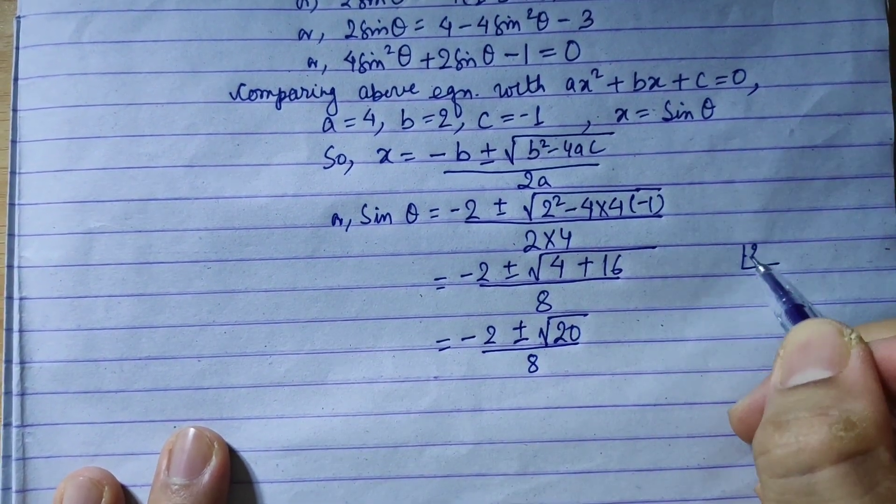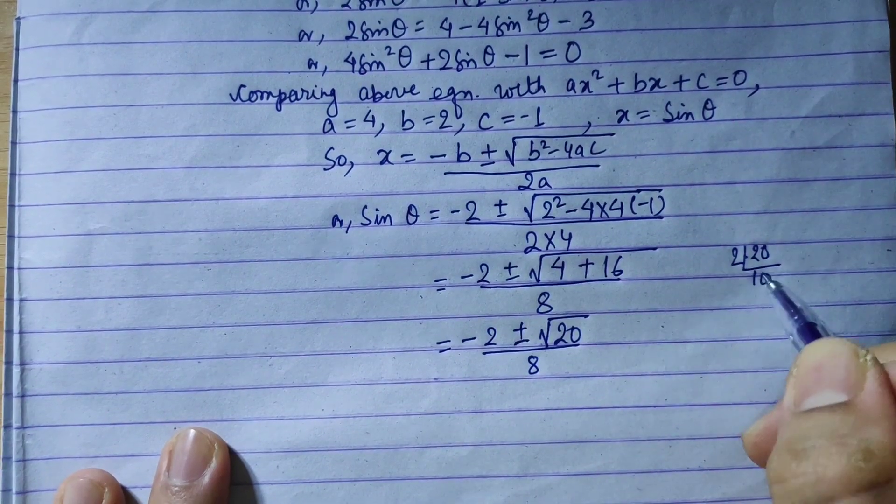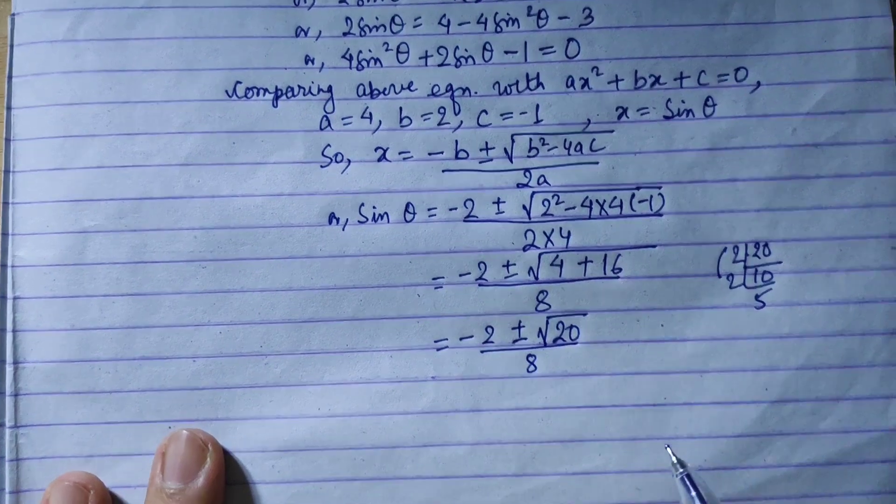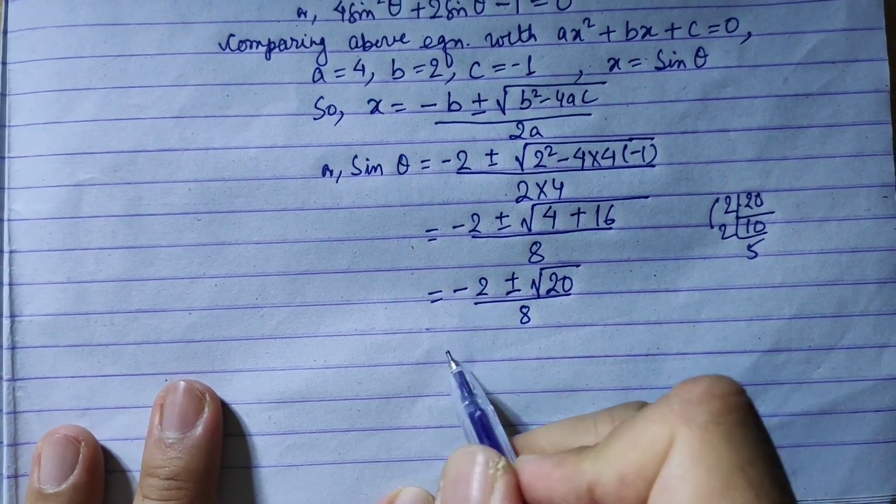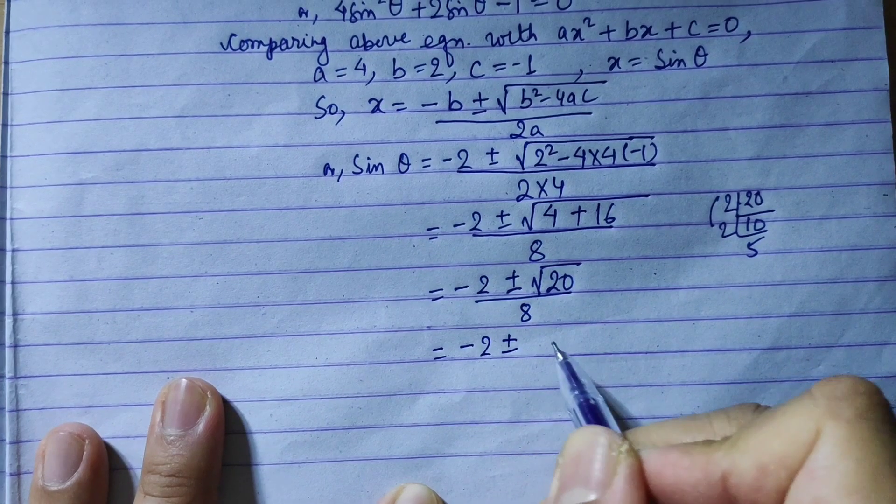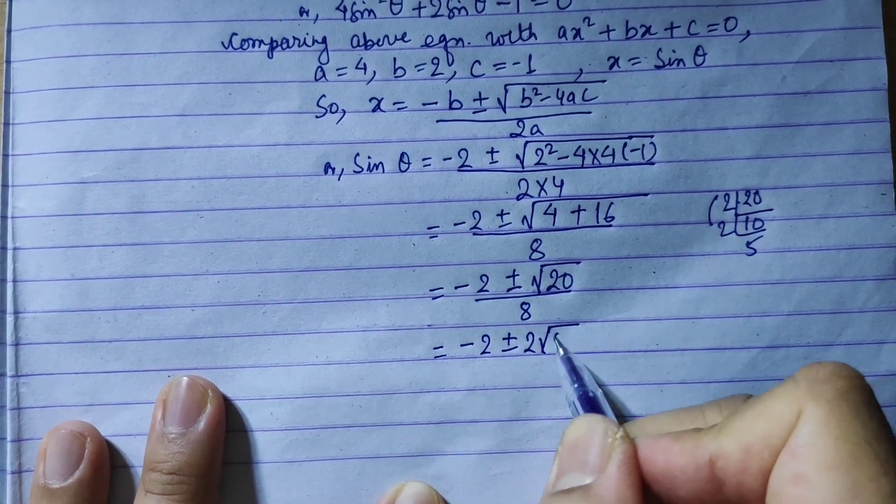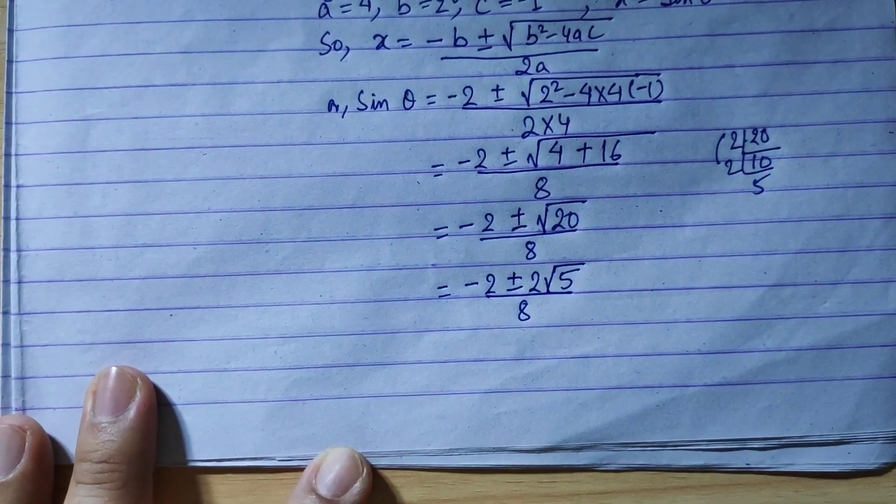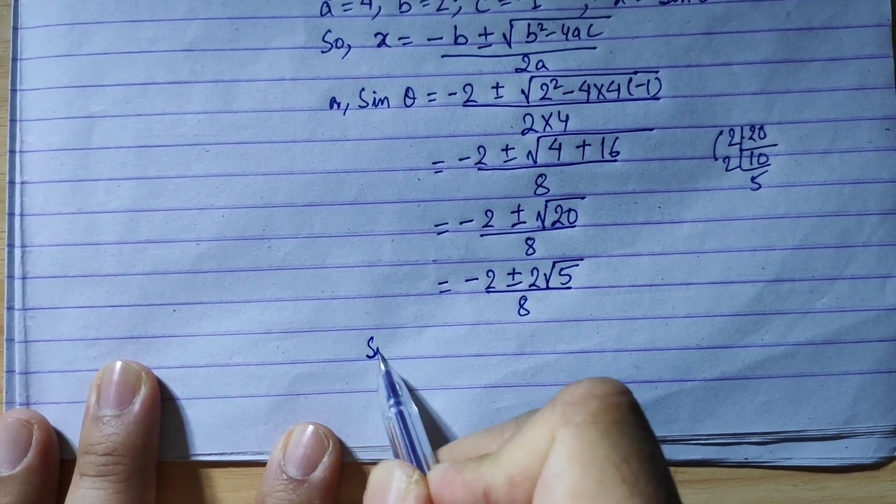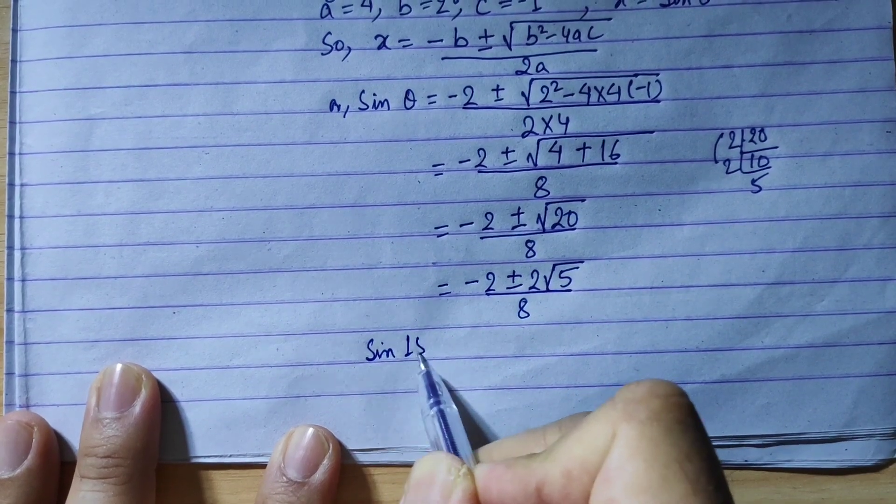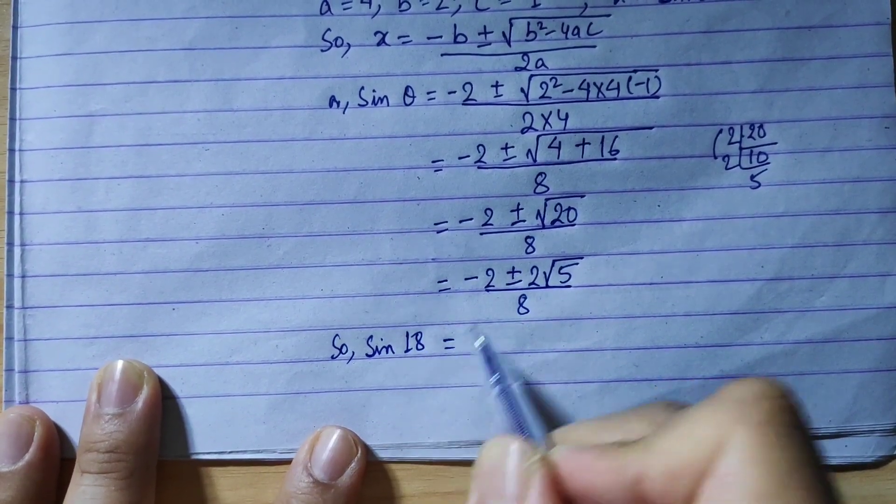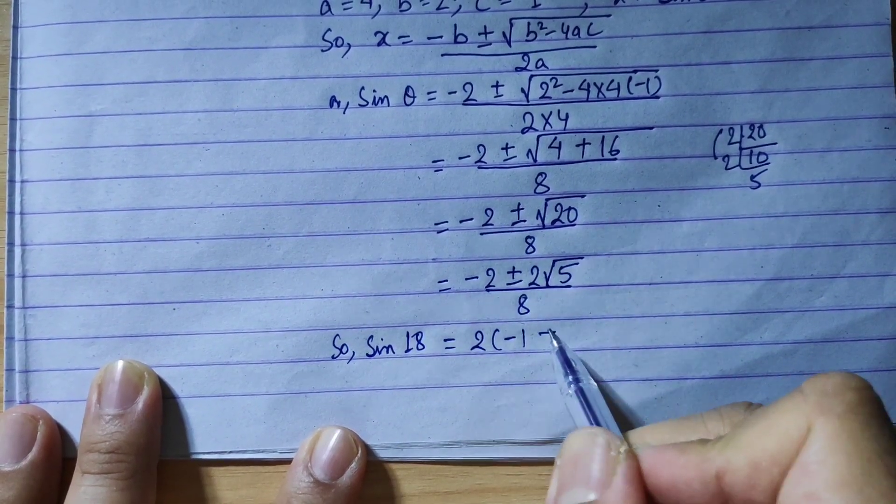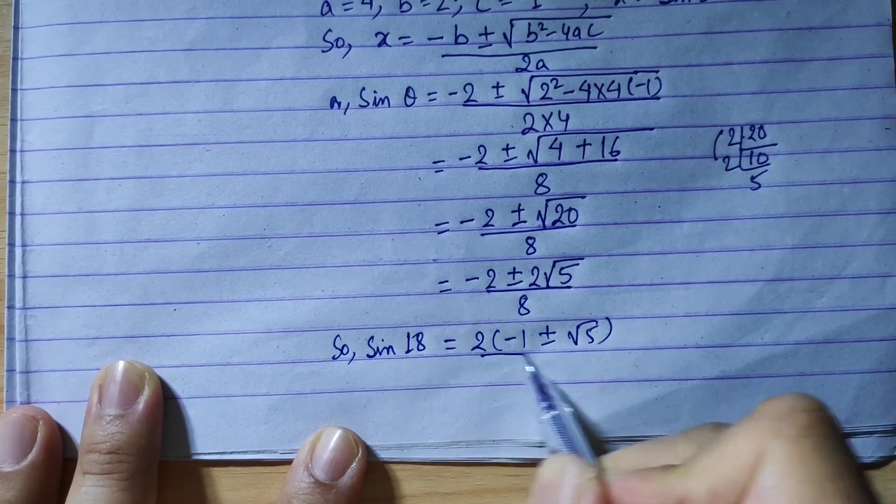Now 20 is equal to 2 times 2 times 5. So 2 square into 5 equals 2. So minus 2 plus minus 2 root 5 upon 8. So this is the sin theta.